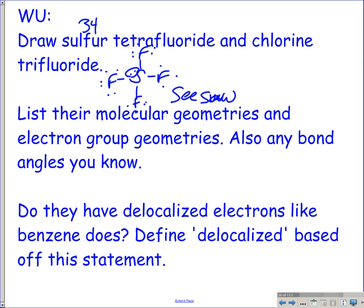The lone pair is part of the molecule, but when we say molecular geometry we're counting the atoms and seeing where they exist after repulsion has occurred. If you visualize a lone pair right here, what's the shape? Trigonal bipyramidal — that's where I get those two shapes from. For seesaw you're talking about the molecular geometry; the electron group geometry is trigonal bipyramidal.